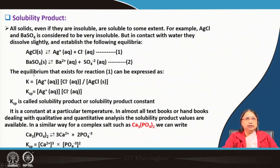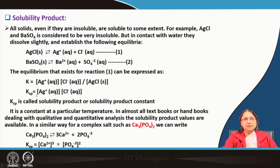For equation 1, K equals the concentration of Ag⁺(aq) times Cl⁻(aq) divided by the concentration of AgCl in the solid phase. Since the solid concentration is constant, we incorporate it into the equilibrium constant, giving us Ksp = [Ag⁺][Cl⁻]. Ksp is called the solubility product.